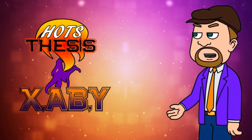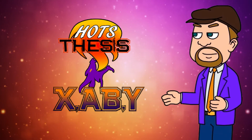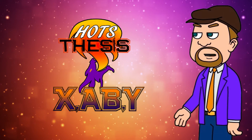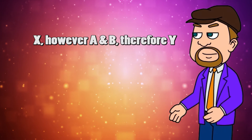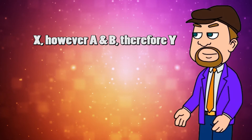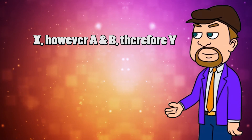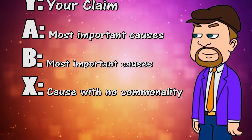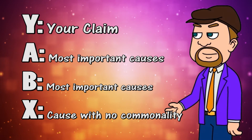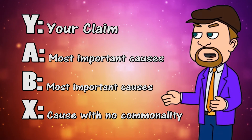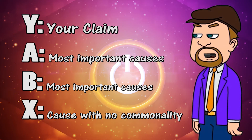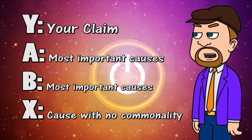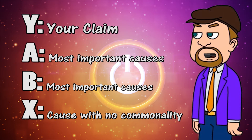Any cause and effect essay will start with a HOTS thesis sentence, written in the format X, therefore Y. In a cause and effect essay, the Y is your claim — the effect. The A and B are the two most important or visible causes, and the X is a cause that shares little commonality with your A and B.